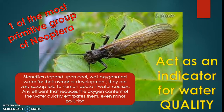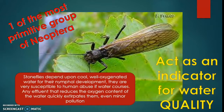Stoneflies also depend upon cool, well-oxygenated water for their nymphal development. They are very susceptible to human abuse of water courses. Any effluent that reduces the oxygen content of the water quickly extirpates them, even minor pollution.